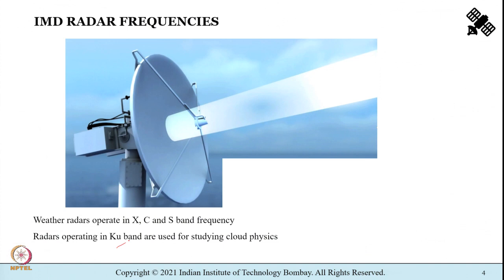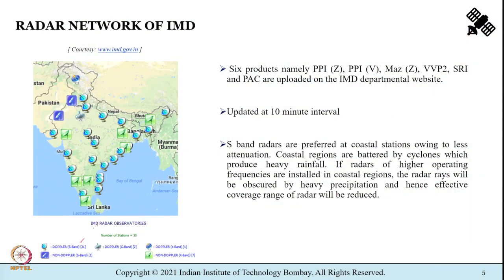Weather radars typically operate in X band, C band, and S band frequency. Radars also operate in Ku bands, and such radars are mostly used for studying cloud physics. If you visit the India Meteorological Department website you can see the radar network of India, where S band, C band, and X band radar locations are visible. Typically six products are made available and updated at 10-minute intervals on the IMD website.